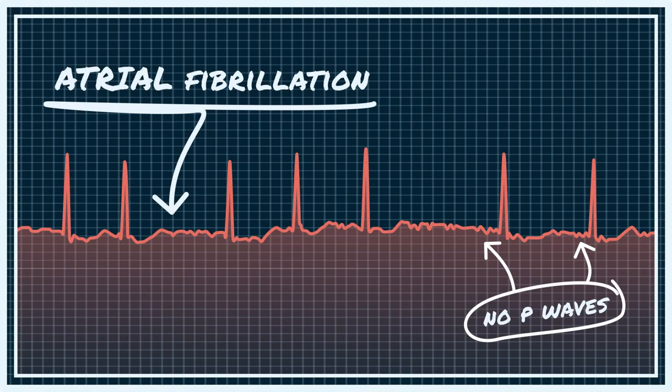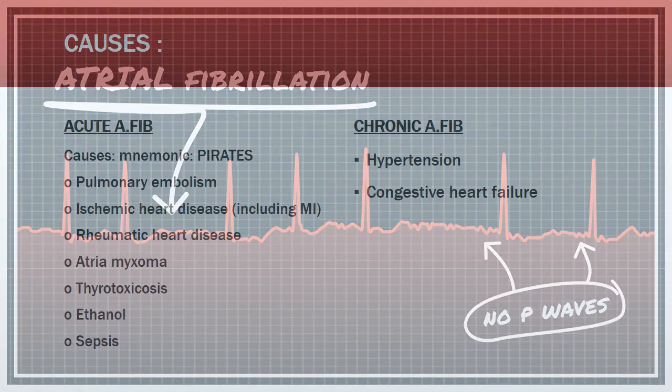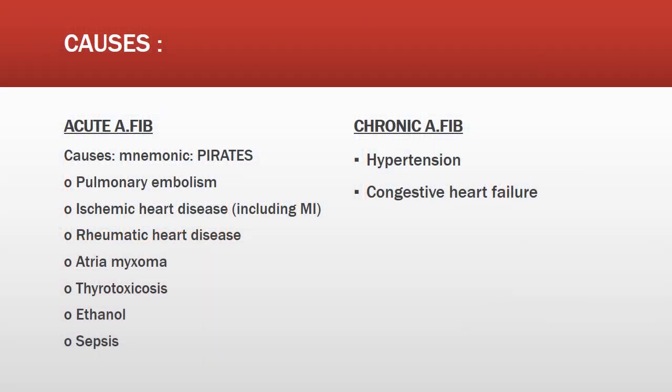The causes of acute atrial fibrillation can be remembered using the mnemonic PIRATES: P for Pulmonary embolism, I for Ischemic heart disease including MI, R for Rheumatic heart disease, A for Atrial myxoma, T for Thyrotoxicosis, E for Ethanol, and S for Sepsis.